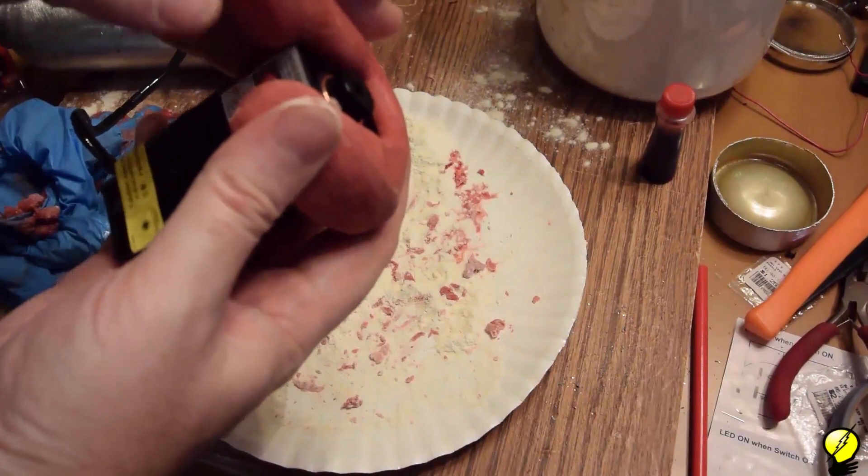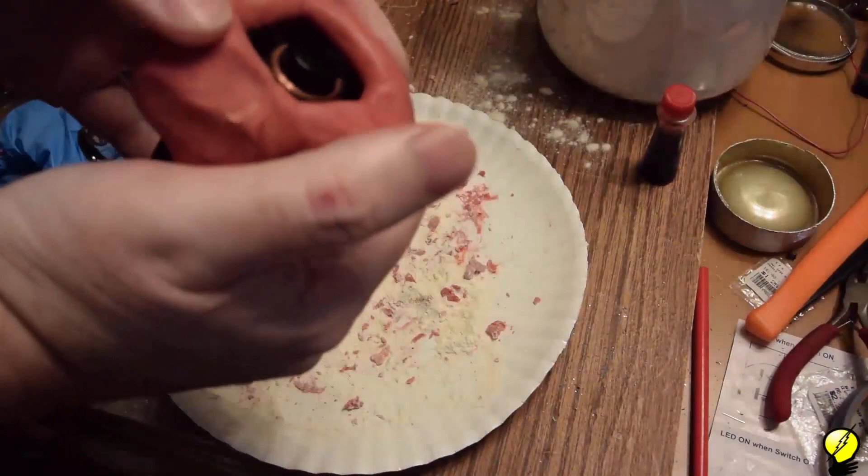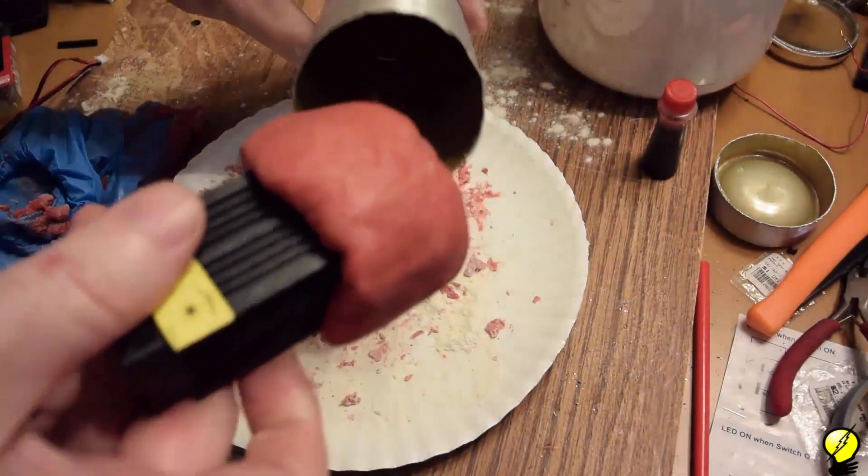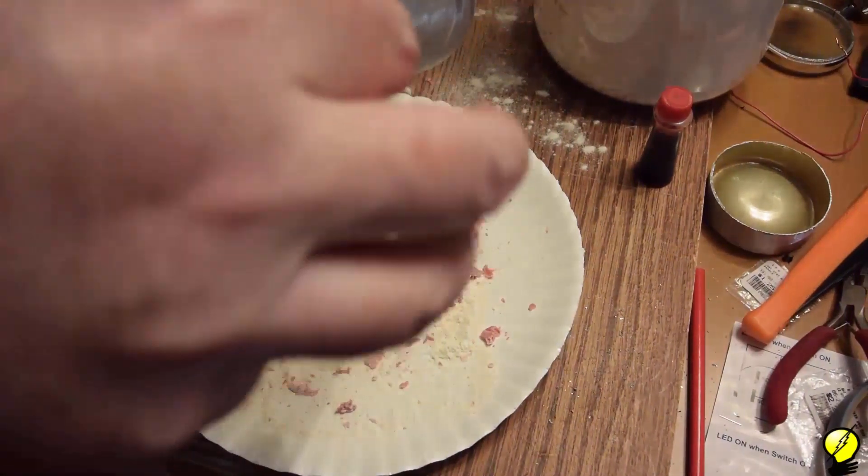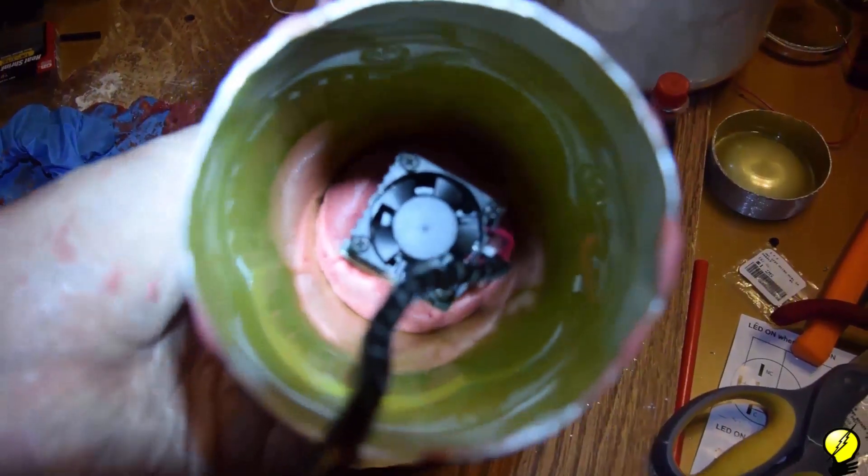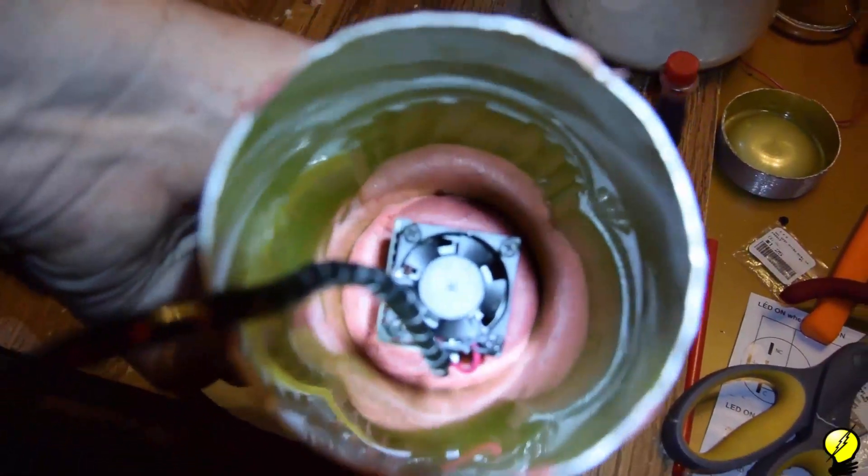Before the rubber sets, form it around the laser. And then insert both the laser and the rubber into the pledge canister. Ensure that everything is properly aligned and that the lens doesn't get covered by the rubber. I let the rubber cure overnight.